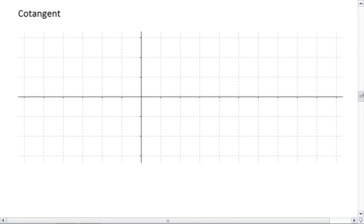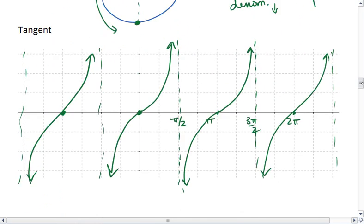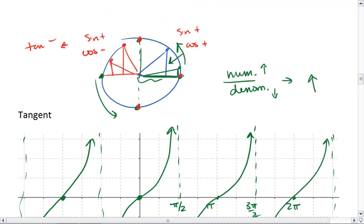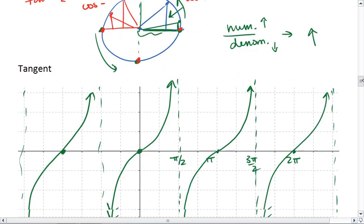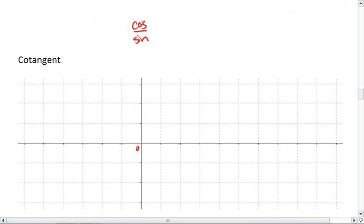Okay, cotangent. Cotangent actually looks very similar to tangent with a couple key differences. Instead of our vertical asymptotes happening when cosine is 0, they happen when sine is 0, because cotangent is cosine over sine. Sine is 0 at 0, at π, at 2π.